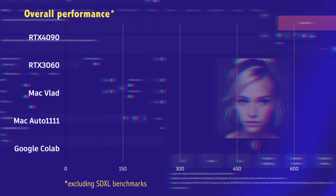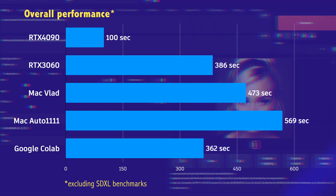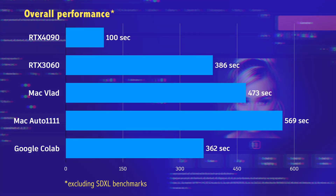To summarize, let's take a look at the overall performance and then come to a conclusion. The 4090 is the clear winner — it performs nearly four times better than the 3060, nearly five to six times better than the Mac, and three and a half times better than Google Colab in the basic version. But please keep in mind that in my case the machine also has 64 GB of memory and a fast CPU.